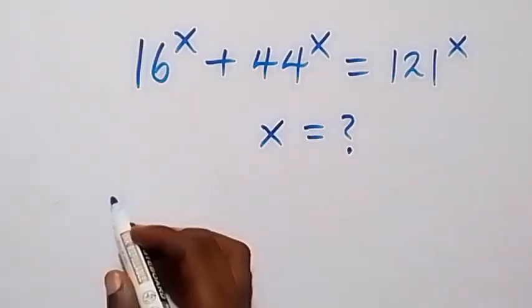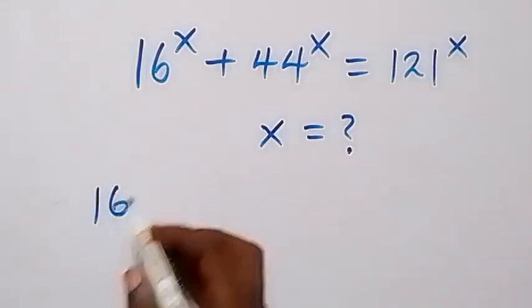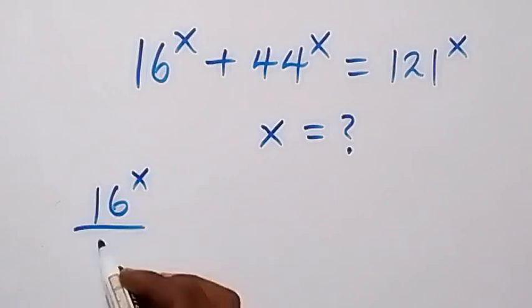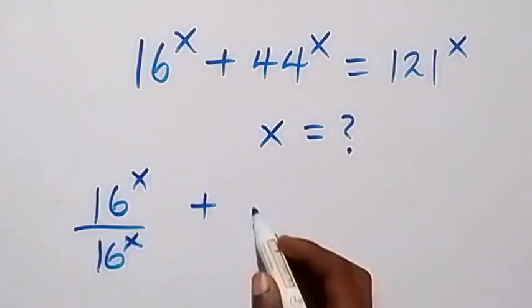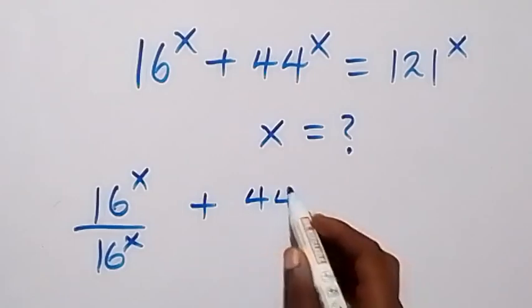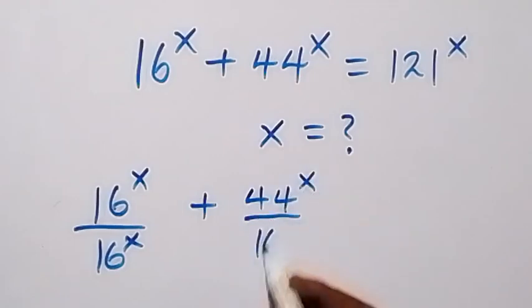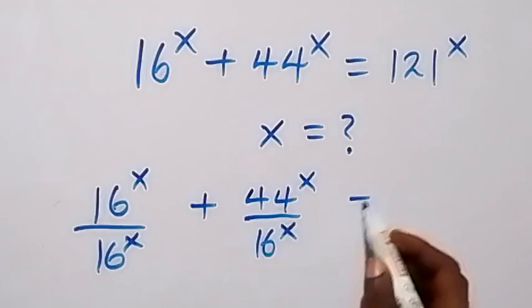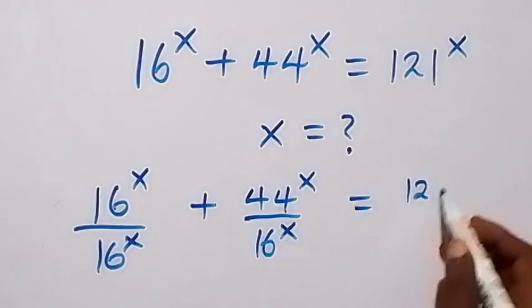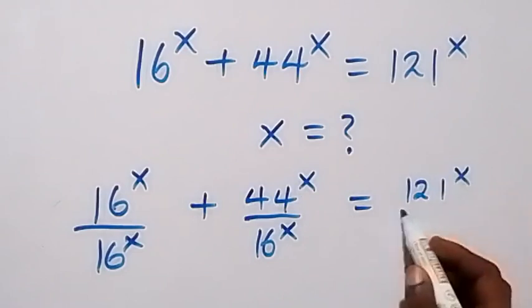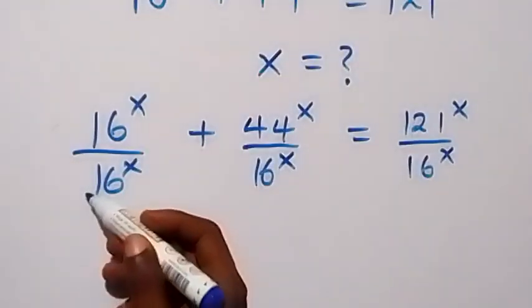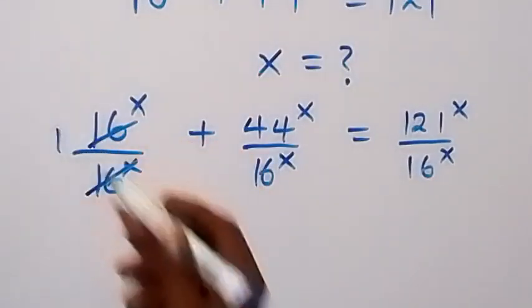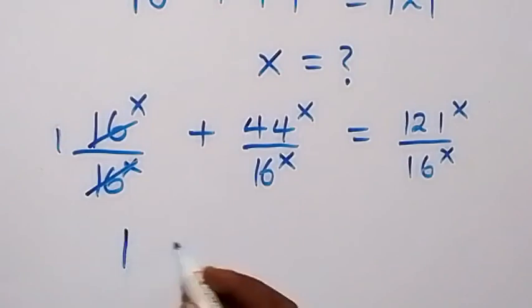Now let's divide through by 16 raised to power x. So we have 16^x divided by 16^x, plus 44^x divided by 16^x, equals 121^x divided by 16^x. On the left side, 16^x over 16^x cancels out and we remain with 1, so we have 1 plus...